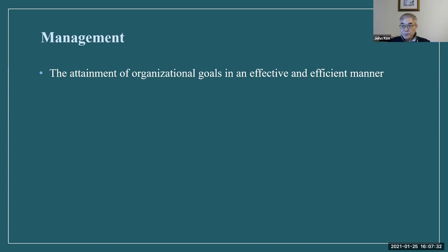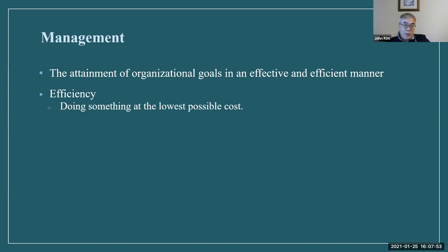Let's define what efficiency is. Efficiency is doing something at the lowest possible cost. Another question: how can a company improve its efficiency? The answer is if they can produce or sell at the lowest possible cost — cut the cost, make something cheaper — then the company's efficiency improves.